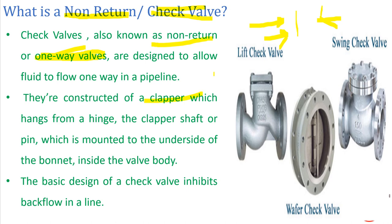These valves are basically constructed of a clapper or a plate which is hinged at the top. When the flow of fluid strikes this plate, the plate gradually opens, and when backflow strikes from another direction, the plate closes. These valves are basically used in pump lines, compressors, and pipelines where you don't want your fluid to come back — to prevent equipment damage. The basic design of a check valve inhibits backflow in a line.